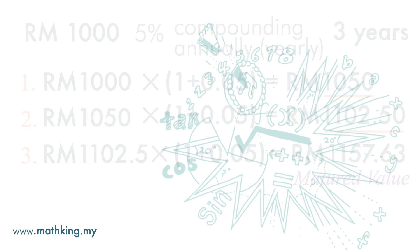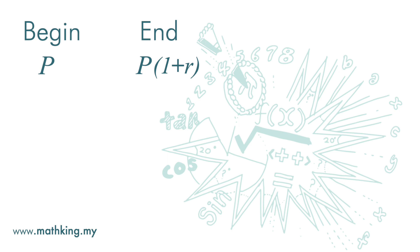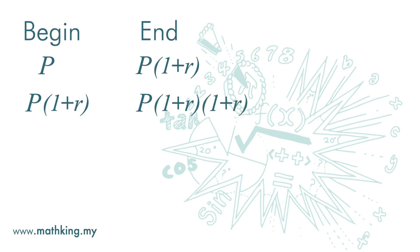Now let's look at the formula. At the beginning of the year, you have the principal amount P. By the end of the first year, the money you will get is P times 1 plus R. This amount, P times 1 plus R, will become the principal at the beginning of the second year. By the end of the second year, this amount will become P times 1 plus R, times 1 plus R, so we get P times (1 plus R) squared.